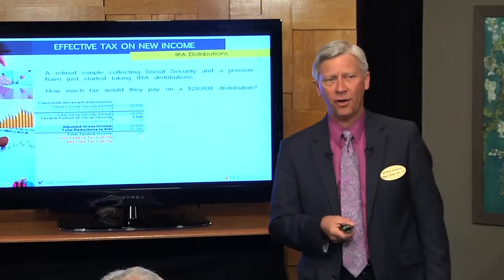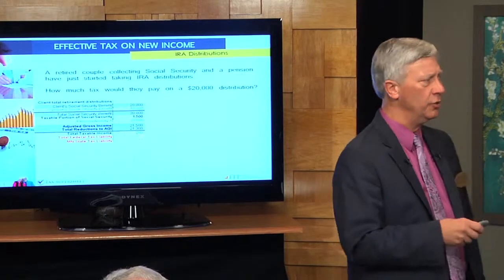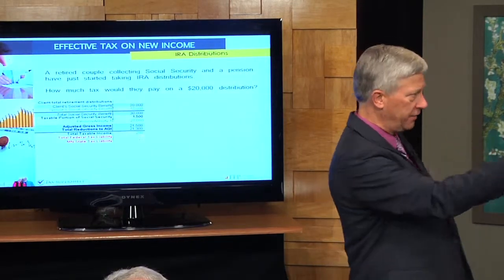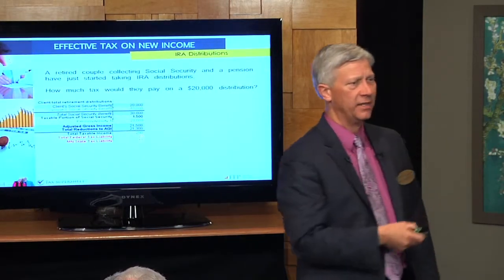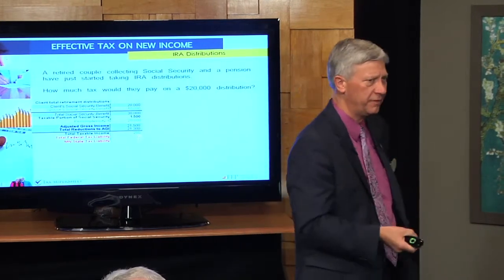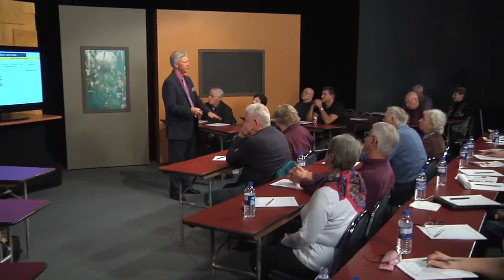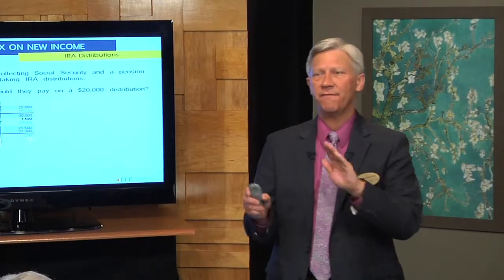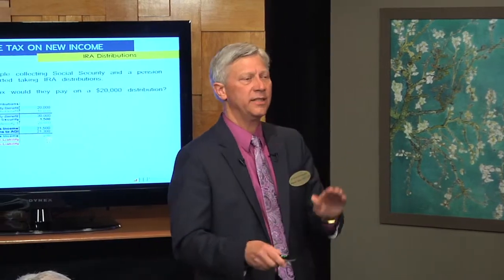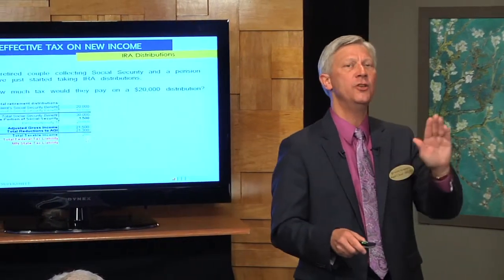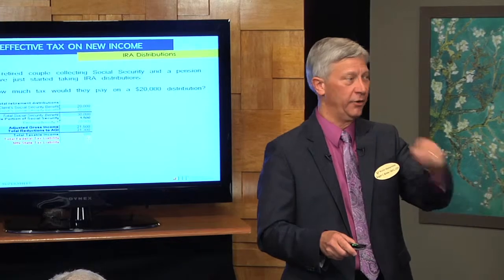We've coined a term — we call it the effective tax on new income: effective tax on a capital gain, effective tax on an IRA distribution, effective tax on a savings bond redemption, whatever you want to call it. The effective tax is not the total tax divided by total taxable income; the effective tax is the tax created from the new income.